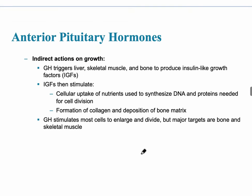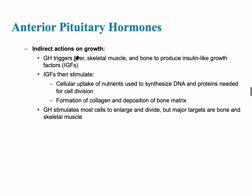Growth hormone increases levels of other nutrients such as fatty acids that can be used for protein synthesis. The indirect actions include triggering the liver, skeletal muscle, and bone to produce insulin-like growth factors. These tissues are the target tissues for growth hormone. Insulin-like growth factors help with cellular uptake of nutrients, similar to how insulin allows glucose uptake from blood into tissue. Growth hormone stimulates most cells to enlarge and divide, but the major targets are bone and skeletal muscle.